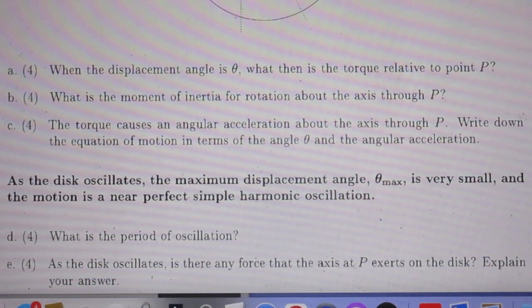As the disc oscillates, the maximum displacement angle, theta maximum, is very small and the motion is a near-perfect, simple harmonic oscillation. We call that small angle approximations, remember?